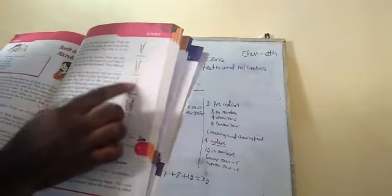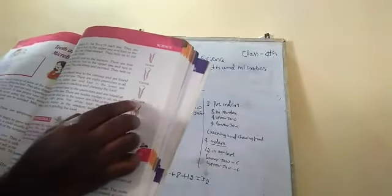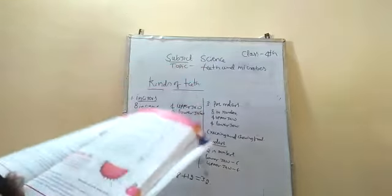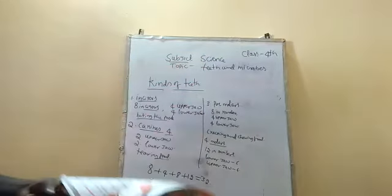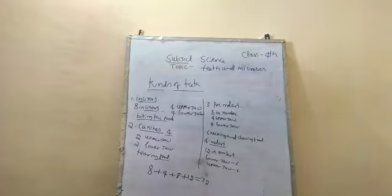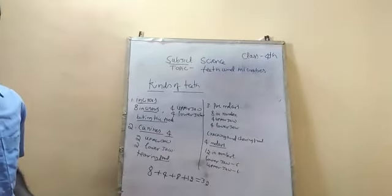This is the placement of teeth in the lower jaw, and these are the kinds of teeth: incisors, canines, premolars, and molars. In the next video, we can discuss the structure of the tooth.